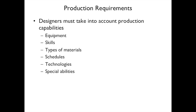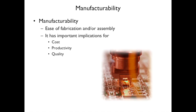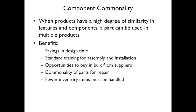Production requirements: whatever you're designing has to be reproducible. In the product or service business, you need to ask: what equipment is needed? What skills are required? What materials come into this? What are your schedules, technologies, and special abilities? Manufacturability — how hard is it to fabricate or assemble — also matters. If it's really hard, it's going to cost more and produce lower quality. If it's easy, you can reduce costs, produce more, and have better quality.